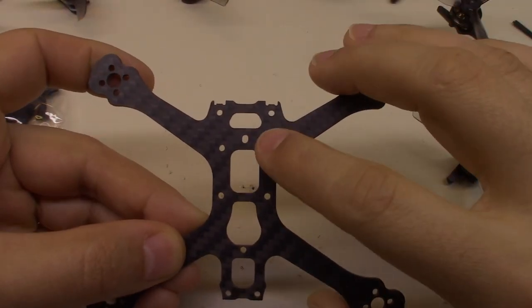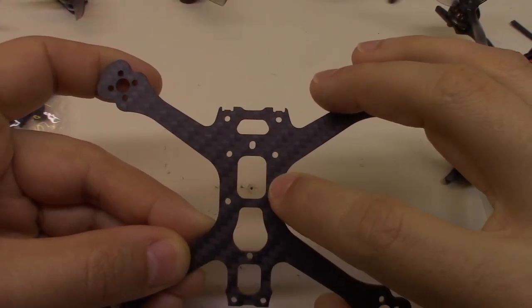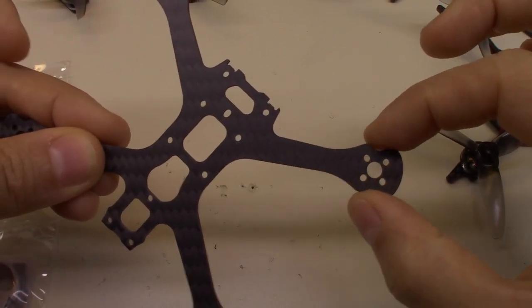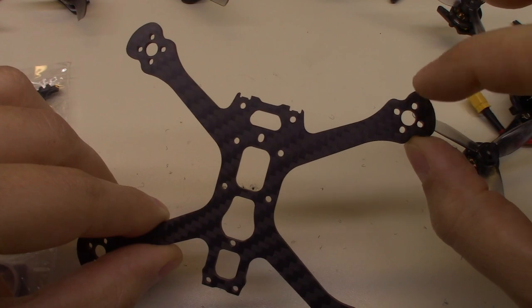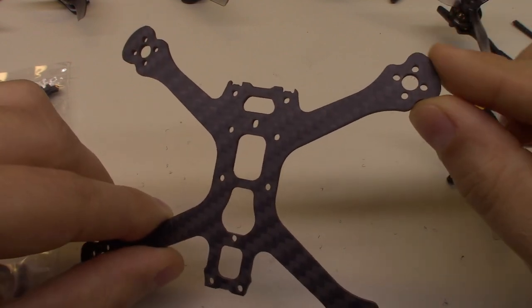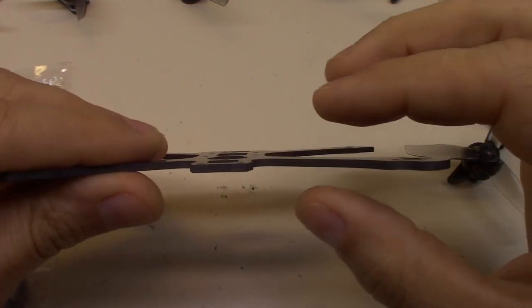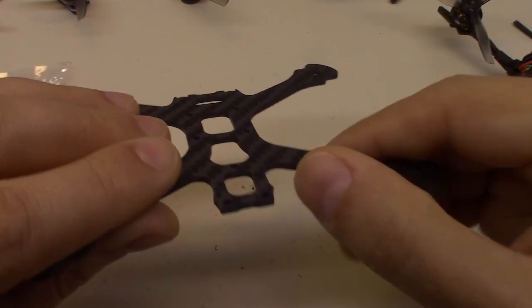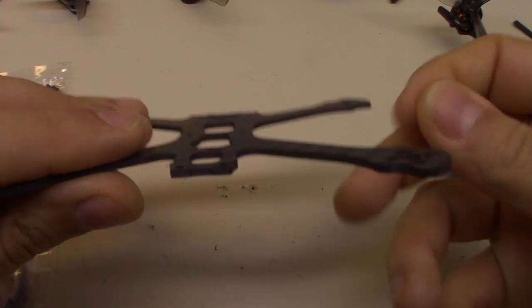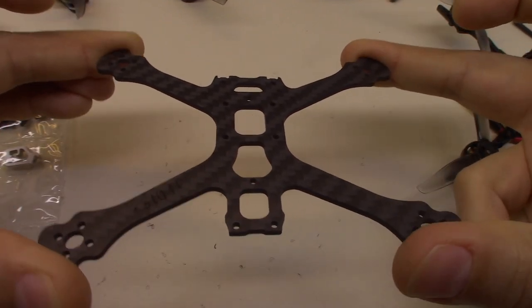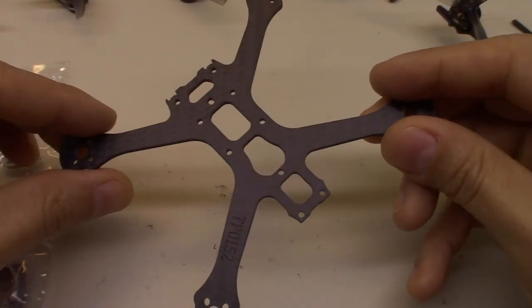So the frame itself is set up for 16x16 stacks. And then it has 9mm bolt spacing mounts for the motors. It has a little bit of nice protection here for the motors. It looks like 2mm thick carbon for the main plate. It is not chamfered, but it does appear to be pretty well cut out. It feels reasonably stiff. I think it's about what you'd expect.